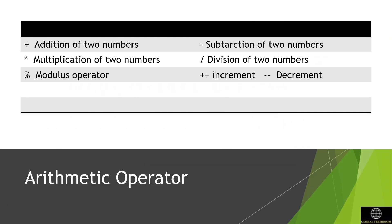Arithmetic operators: C supports all basic arithmetic operations. The following table shows all the basic arithmetic operators. An arithmetic operator performs mathematical operations such as addition, subtraction, multiplication, division, etc., on numeric values.